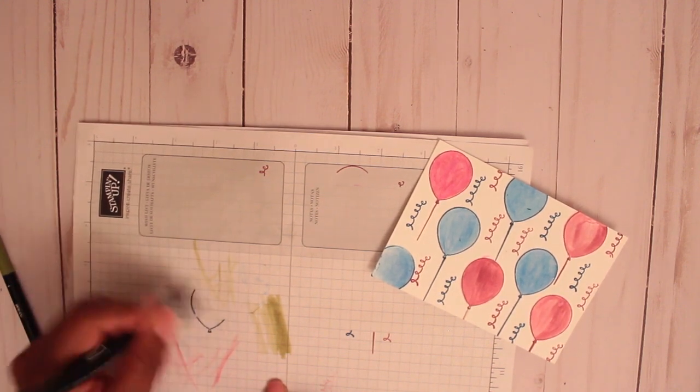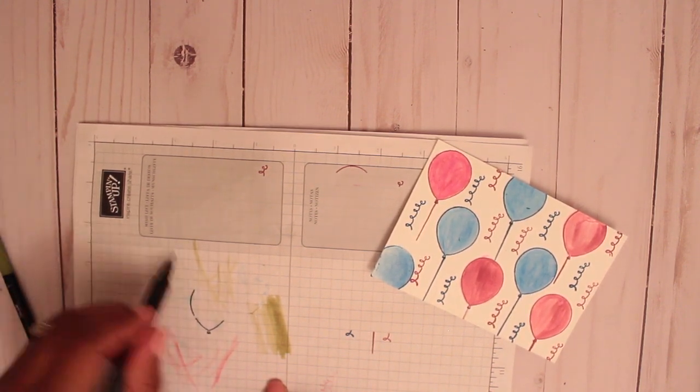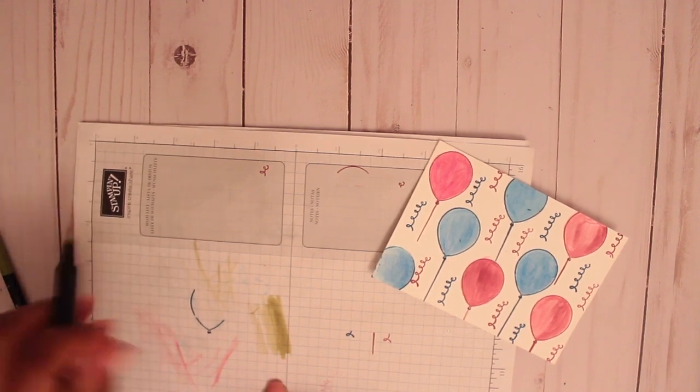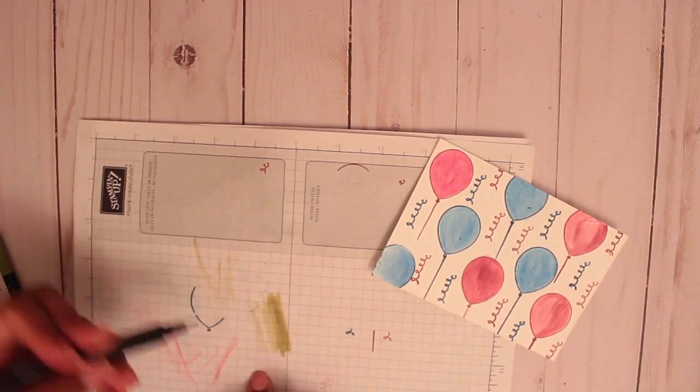After you just wipe it off, get a scrap piece of paper and wipe it off and it gets clean and you move on to your other color. I think those are so neat.